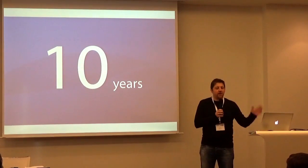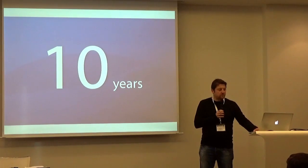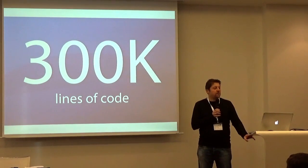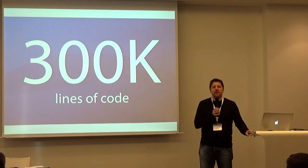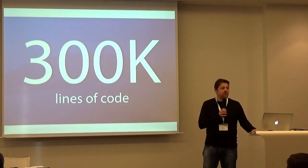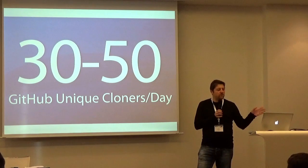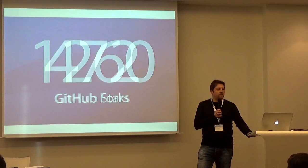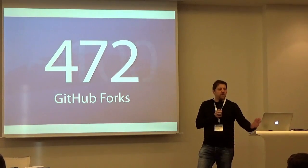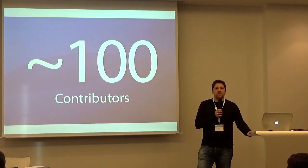It's been 10 years — actually 11 years since I started working on it. We have about 300k lines of code; if you take all of POCO it's more like 600k, but we use a lot of existing C libraries inside POCO. More than 1,000 classes. We are now on GitHub and get about 30 to 50 clones a day. We have 1,260 likes or stars on GitHub, 472 GitHub stars, and about 100 contributors who over the past 10 years contributed some code to the POCO libraries.